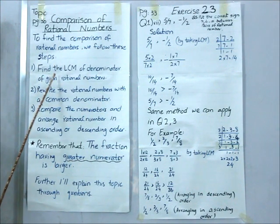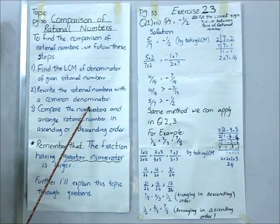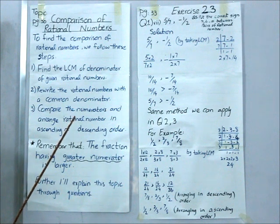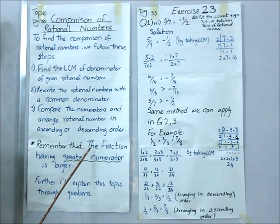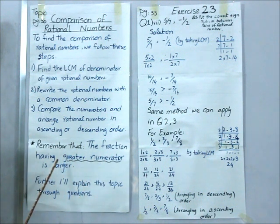Step one: find the LCM of the denominator of a given rational number. Then rewrite the rational numbers with a common denominator. After that, compare the numerators and arrange rational numbers in ascending or descending order. The most important thing to remember is that the fraction having the greater numerator is larger.